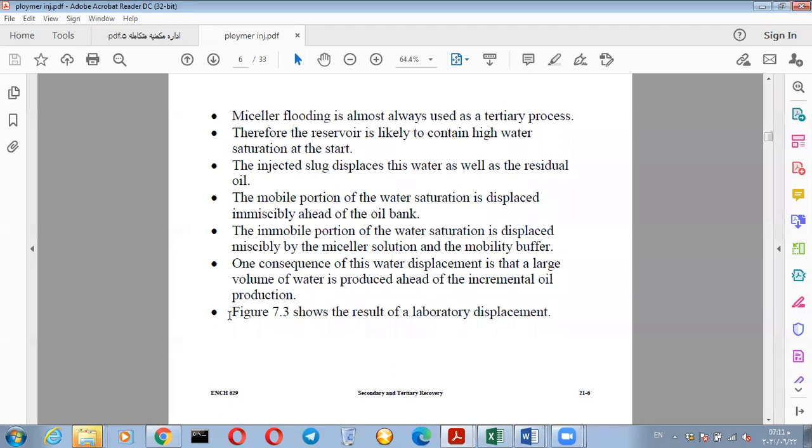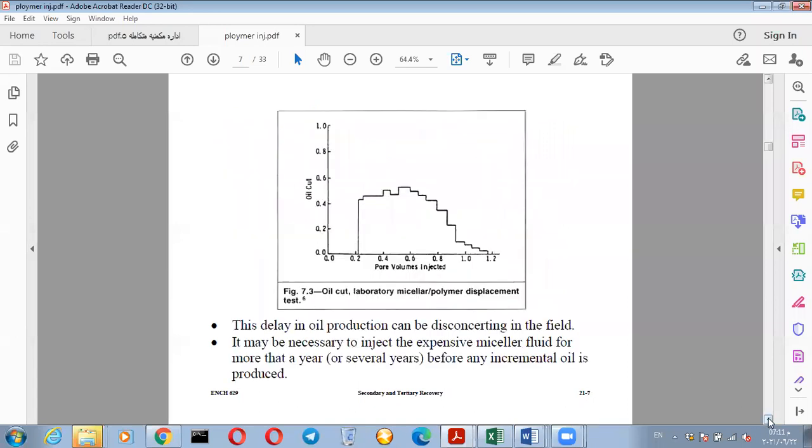Figure 7.3 shows laboratory displacement results. Oil cut, or fw, represents the fraction of oil in the total stream. Notice at point 0.22 pore volumes, there's no oil production yet. Then oil production begins, and fw reaches about half of the stream before declining.